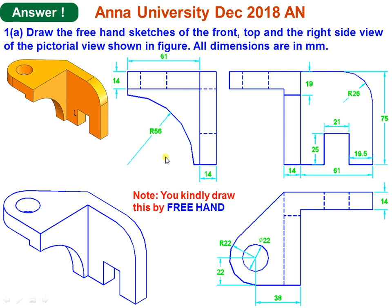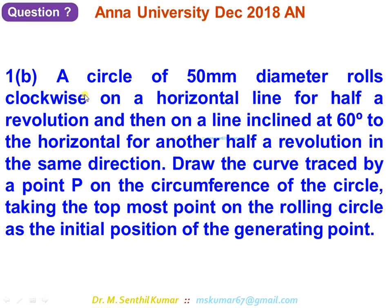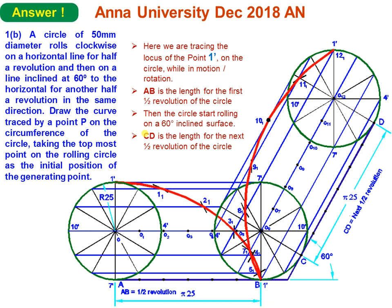The next problem, 1b: a circle of 50 mm diameter rolls clockwise on a horizontal line for half a revolution, and then on a line inclined at 60 degrees to the horizontal for another half a revolution in the same direction. Draw the curve traced by point P on the circumference. The answer has two components: for the first half revolution it rolls on a flat horizontal surface, and for the next half revolution it rolls on a surface inclined at 60 degrees.